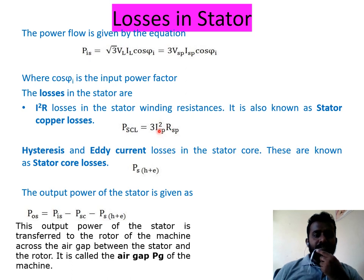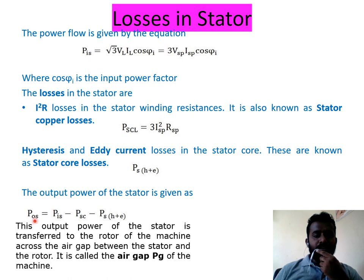Since V = IR, power loss is expressed as I²R. Because there are 3 phases, it is 3 times I²R. There are also hysteresis and eddy current losses in the stator core, known as stator core losses. The output of stator (POS) equals power input of stator minus stator copper loss minus hysteresis and eddy current losses. These are copper losses and core losses, nothing but iron losses.